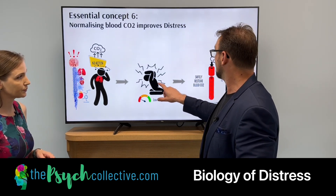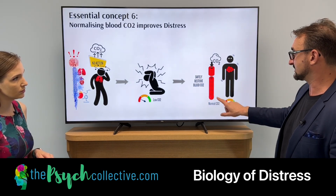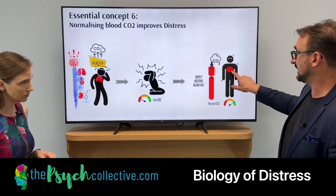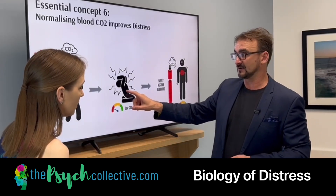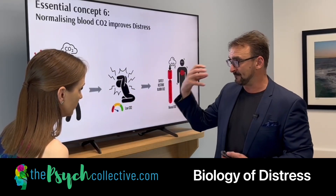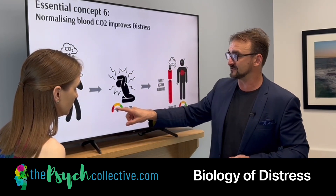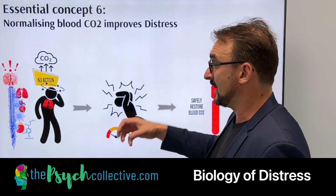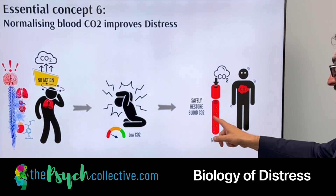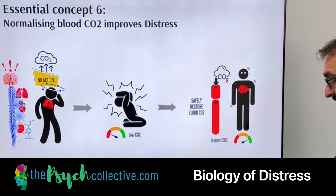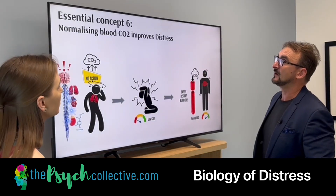So here we are — distressed. What we want to do is safely restore the blood carbon dioxide to normal. We're not necessarily happy, but we're not freaking out. There's a lot of arousal going on in the nervous system, but a big factor is we've blown off all this carbon dioxide, it's changed the chemistry of our blood, we can't think straight, the emotion is exaggerated. So we need to put the carbon dioxide back somehow. That's essential concept six.